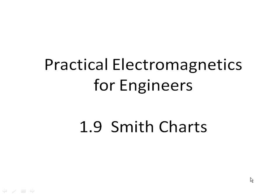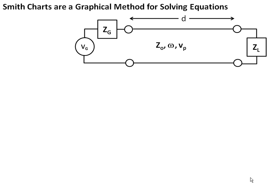Let's talk about Smith charts a little bit before we get into it. Smith charts are a graphical method for solving equations, and we've got essentially a stable of equations that we can use to represent lossless transmission lines. The equations are pretty simple. We assume we're given some kind of source, and that source is everything over on this side of this line. We assume we know some kind of load determined by an impedance, everything on that side of the line. We have some transmission line with a characteristic impedance, frequency, and a phase velocity.